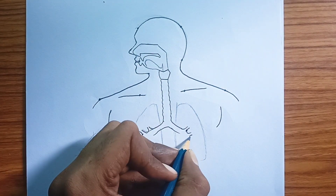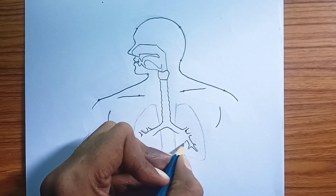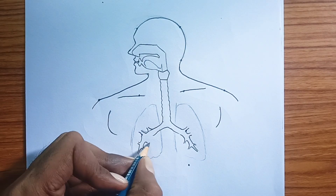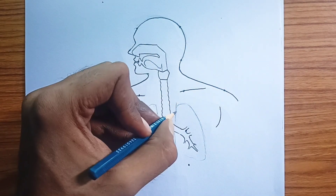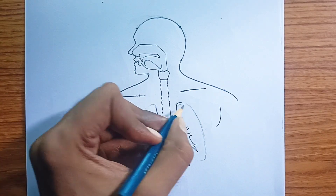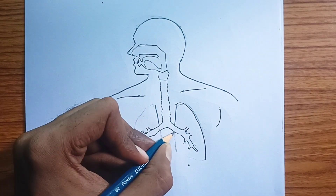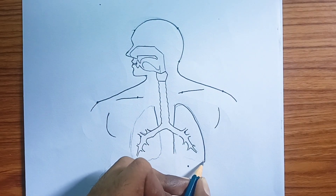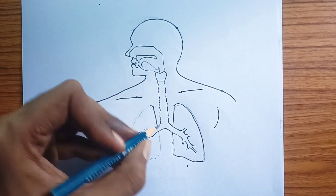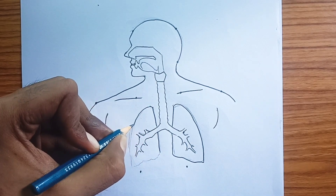Larynx. Commonly known as the voice box, the larynx contains the vocal cords and is crucial for sound production. It also prevents food from entering the trachea. Trachea. Also known as the windpipe, the trachea is a strong cartilaginous tube that extends from the larynx and branches into the bronchi. It provides a clear airway for air to reach the lungs.